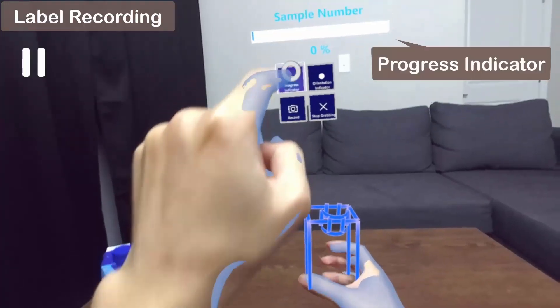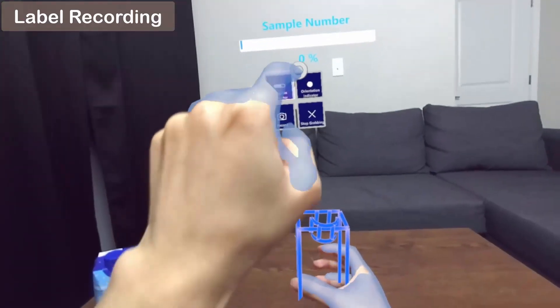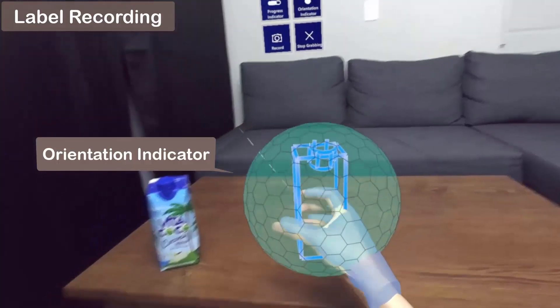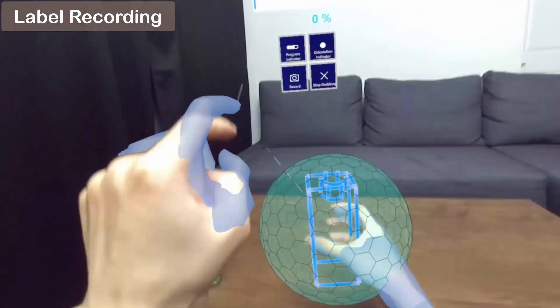The user can toggle on a progressive indicator to tell how much data has been collected. The user can also toggle on the orientation indicator, which indicates what orientation of the object has not been recovered in the current collection session.